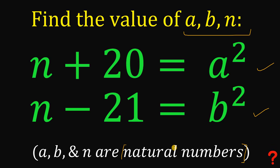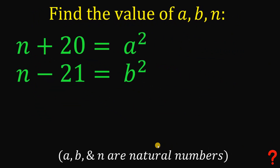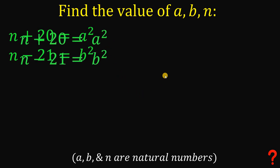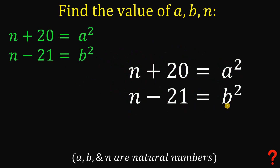Now let's see if you got the correct answer. To answer this question, we're going to use the given equations: n plus 20 equals a squared, and n minus 21 equals b squared. These equations are interesting because we have three unknown variables — a, b, and n — and only two equations. But of course, this question is solvable. We're going to eliminate one variable.